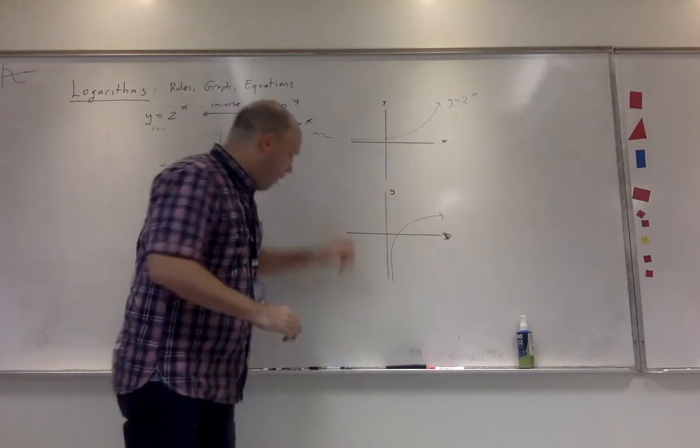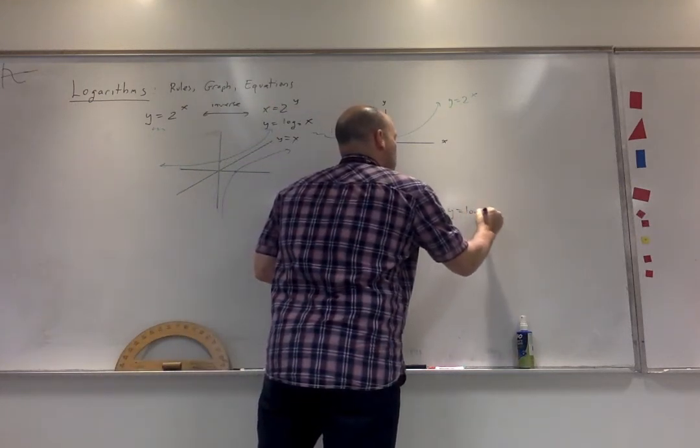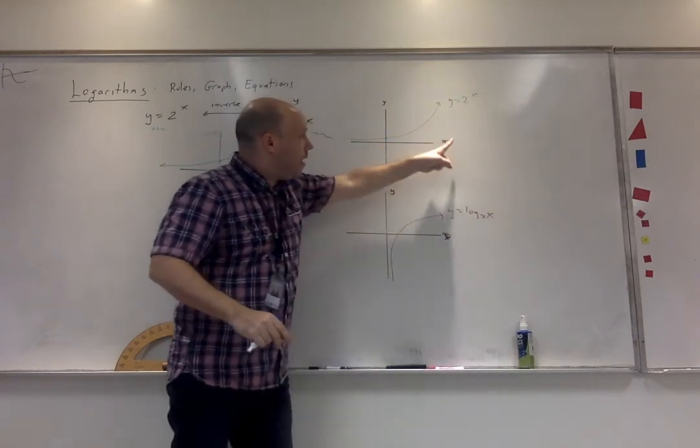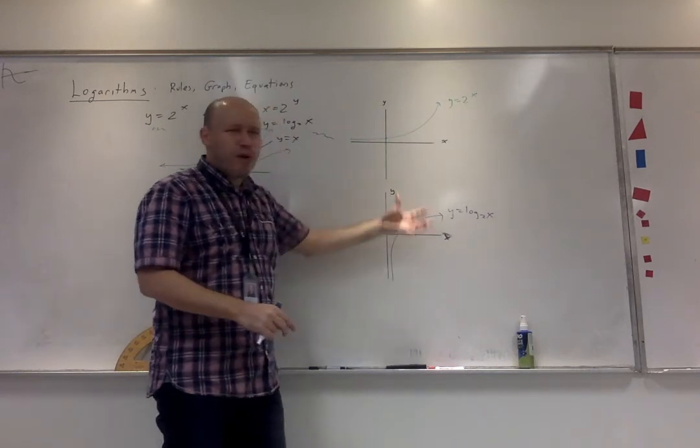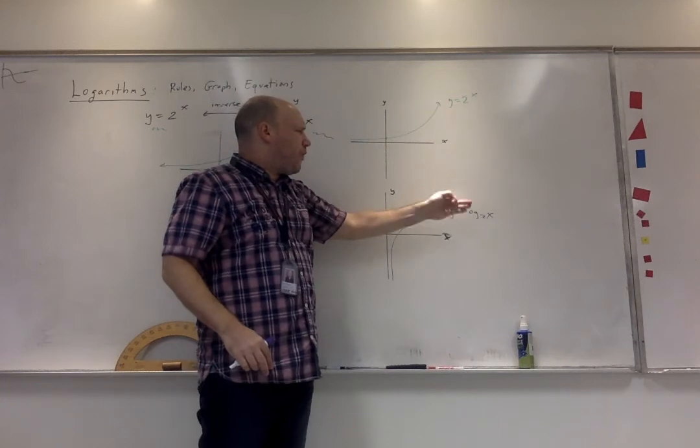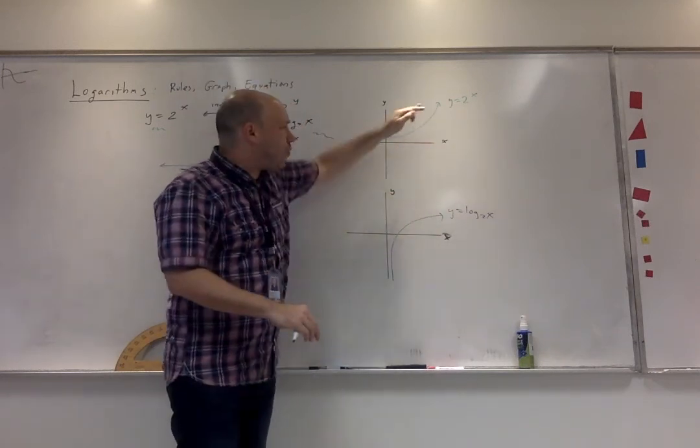This is the function, this is the inverse, and this x is not the same as this. This domain is the range because we switch it. Anyway, this is what the two graphs look like, and then you could apply all the different transformations. So we kind of skipped too deep, but that's what's going on.